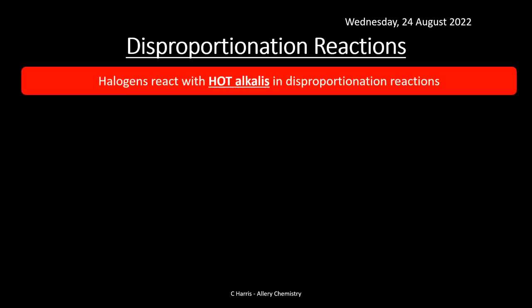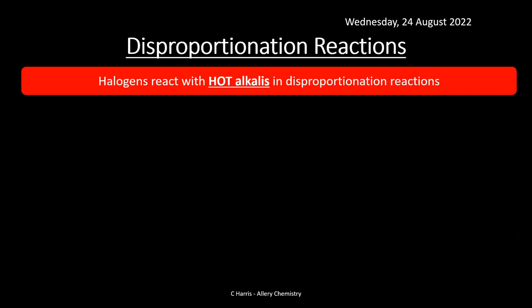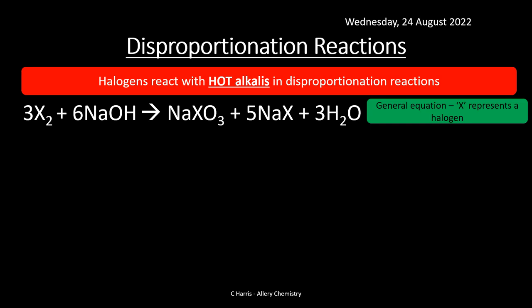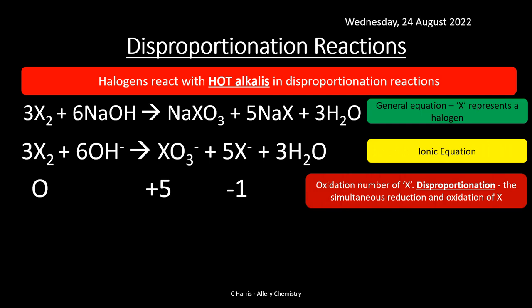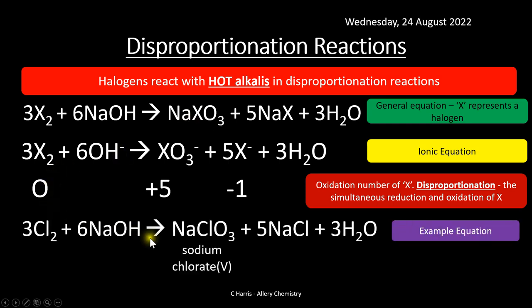With hot alkalis, X₂ reacting with sodium hydroxide forms halide compounds — the ionic equation again shows zero going to +5 (oxidized) and to −1 (reduced), confirming disproportionation. A classic example is forming sodium chlorate(5) solution using chlorine, with the overall reaction showing chlorine reacting with hot sodium hydroxide.